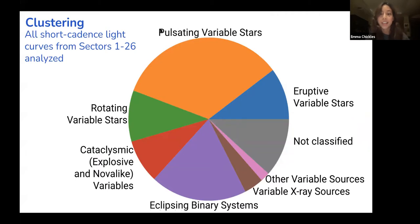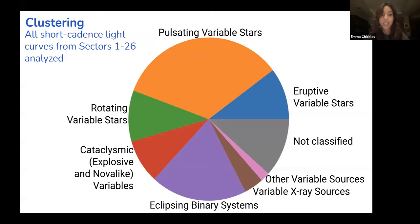Using our pipeline, we've assigned a label to each short-cadence light curve in the first two years. We adopted the variability classification system from GCVS — the General Catalog of Variable Stars — and show six big groupings: four intrinsic variable groupings including pulsating variables, eruptive variables, explosive and nova-like variables, and sources of strong variable X-ray radiation; and two extrinsic groupings — eclipsing binary systems and rotating variable stars. These classifications are based on running the autoencoder on each sector separately, since the pipeline requires a homogeneous input matrix and time gaps from data downlinks differ each sector.